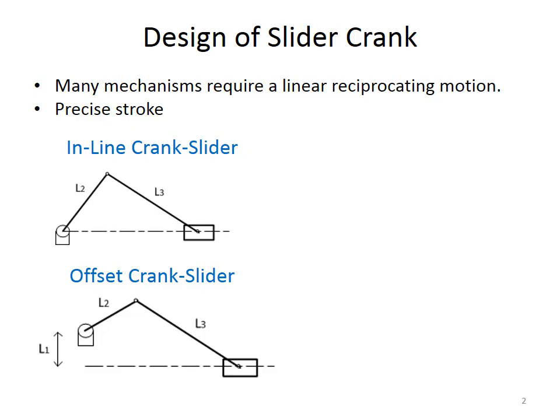We have two types of crank slider. One is the inline crank slider shown in the top picture, which produces symmetrical reciprocating motions. This type is used in different mechanisms such as engines and compressors.